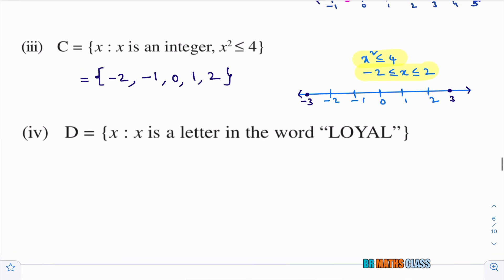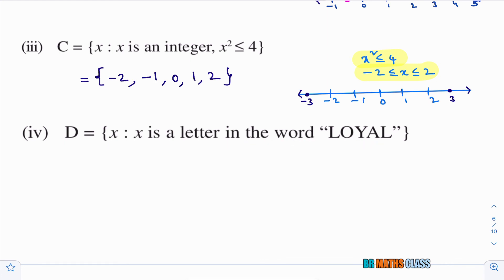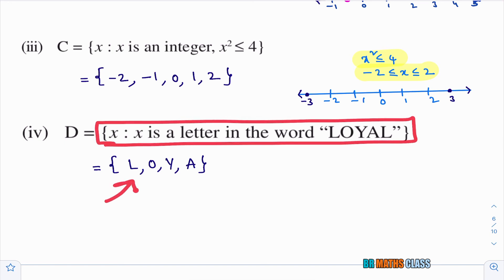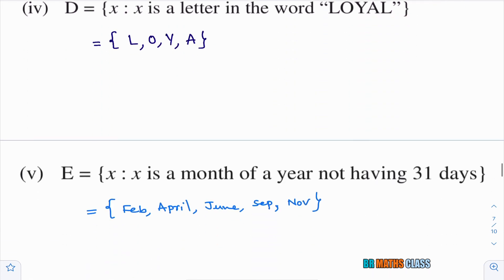Fourth bit: D = {x : x is a letter in the word LOYAL}. Listing letters once: L, O, Y, A. The letter L appears twice in LOYAL, but we list it only once. In roster form: D = {L, O, Y, A}.